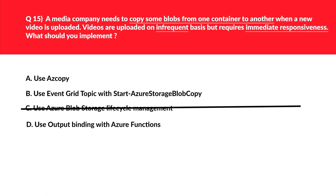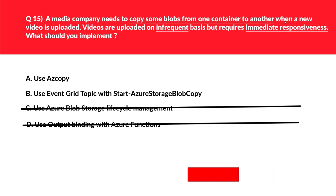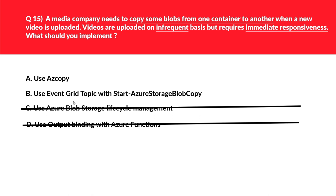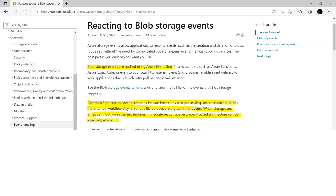Option D, use output bindings with Azure Functions: output binding is data that Azure Functions sends, but the question doesn't require sending data via functions, so that's incorrect. Option A, use AzCopy: the keyword 'infrequent but requires immediate responsiveness' means AzCopy won't help. Instead, an Event Grid topic is required for an event-based architecture, which option B provides.